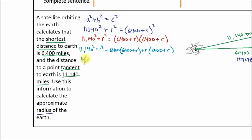Alright, next step, let's keep rewriting. We got 11,140 squared plus R squared is equal to, alright, so we've got 6,400 times 6,400. That's just 6,400 squared. And then we got 6,400 times R, which is 6,400R. And then here we got R times 6,400, which is again 6,400R. And then we got R times R, which is R squared. So all we've done is we've just distributed 6,400 times 6,400, 6,400 times R, R times 6,400, and R times R.